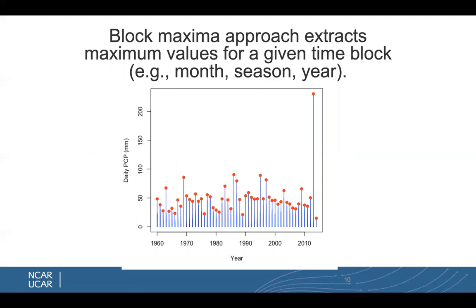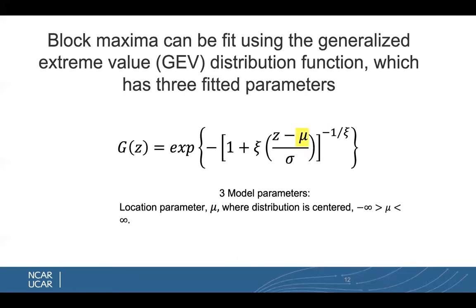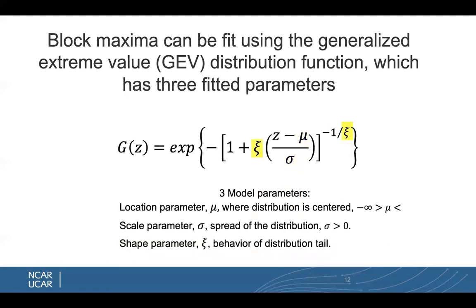This again shows us data from the Boulder Station, where in 2013 we had a very high value. Block maxima data can be fit using the generalized extreme value distribution, or GEV, which has three fitted parameters: first, the location parameter mu, where the distribution is centered; second, the scale parameter, which shows the spread of the distribution; and third, the shape parameter, which gives the behavior of the distribution tail.